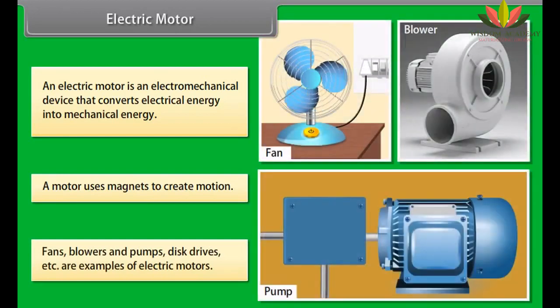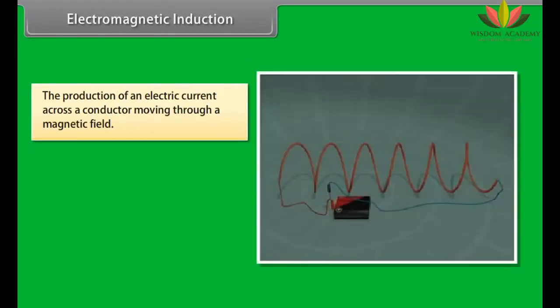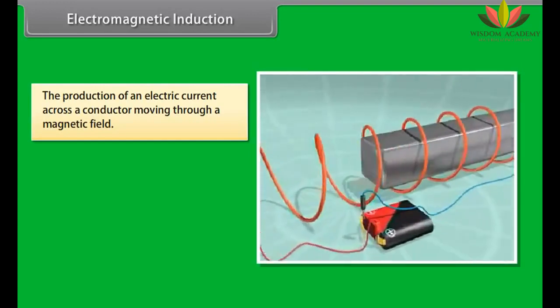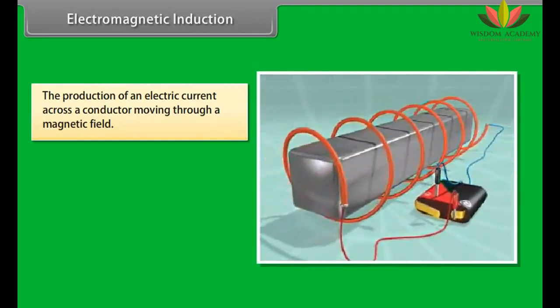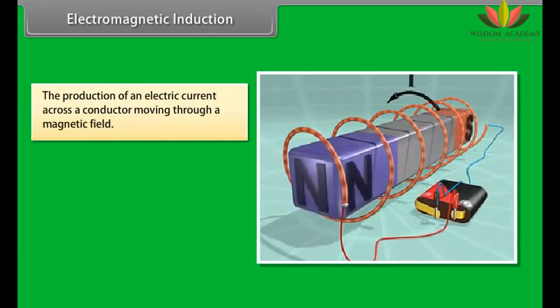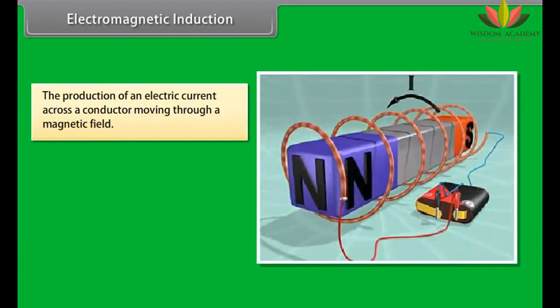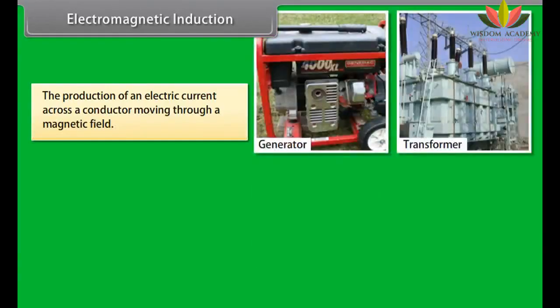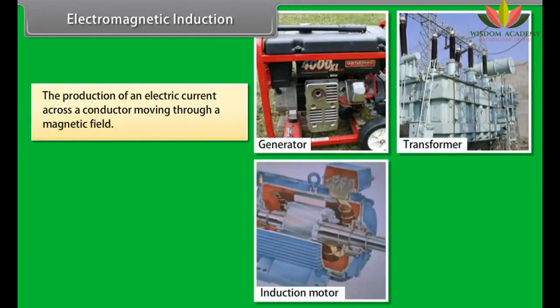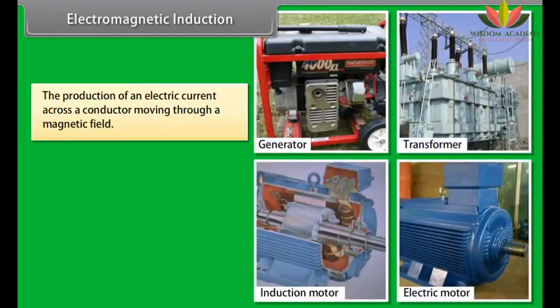Electric Motor. An electric motor is an electromagnetic device. It converts electrical energy into mechanical energy. Let us look at how electric motors work. A motor uses magnets to create motion. Inside an electric motor, the attracting and repelling forces of a magnet create rotational motion. Fans, blowers, and pumps, disc drives, etc. are some examples of electric motors.